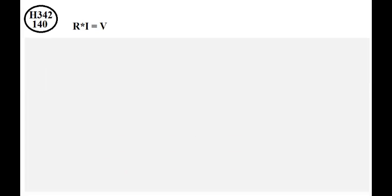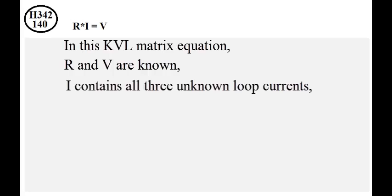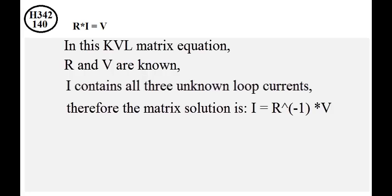This is Kirchhoff's voltage law matrix equation. R and V are known. I contains all three unknown loop currents. Therefore, the matrix solution is I equals R inverse times V.